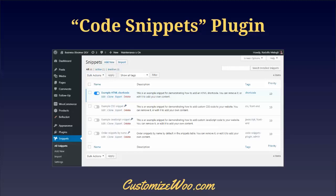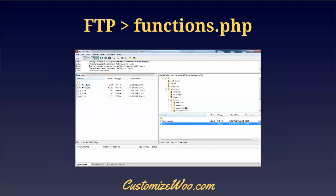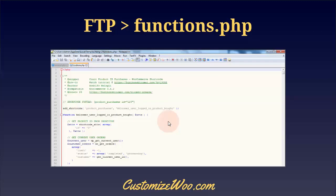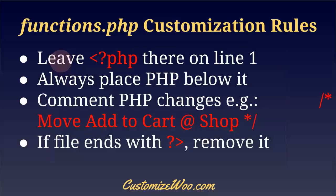The ideal way to customize PHP is to use FTP and navigate to WP content > themes > name of your child theme > functions.php. Once you open that file in your text editor, you can see your actual code, save it, and upload the file back to the server. You can take backups and do a lot of things you couldn't do otherwise.